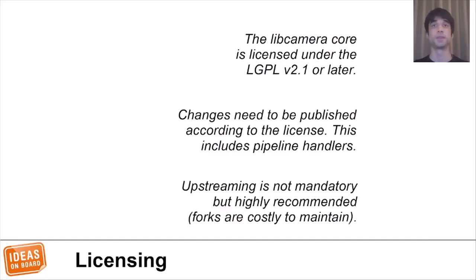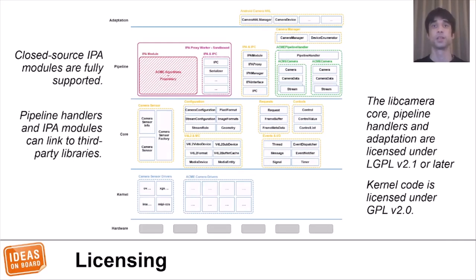A word on licensing: the LibCamera core and the adaptation layer are licensed under LGPL. This includes the pipeline handlers, which need to be published according to the license. The IPA modules are excluded. Only publishing the code is required to comply with the LGPL — upstreaming is not a requirement, though we strongly recommend it. The best results are achieved by working together, and forks are costly to maintain. Note that both pipeline handlers and IPA modules can link to third-party libraries as long as the licenses are compatible. Closed-source IPA modules are fully supported, even if we'd like to encourage vendors to follow the lead of Raspberry Pi and open the algorithms too.